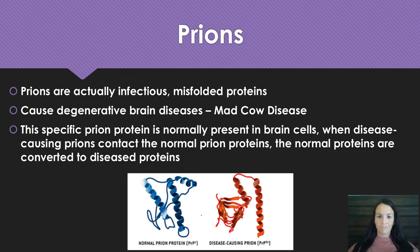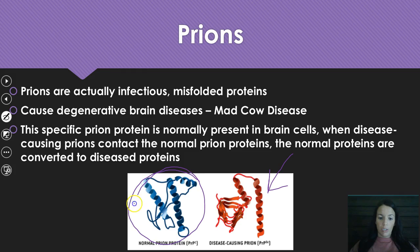We also need to talk about prions. Prions are infectious misfolded proteins — they're not really viruses, but they're very small. They cause degenerative brain diseases similar to mad cow disease. The prion is normally present as a protein in brain cells, but when a disease-causing prion contacts this normal protein, the normal proteins are converted into the disease-causing form, as shown in this picture comparing healthy and infected tissue.